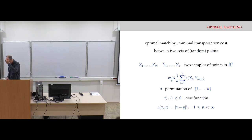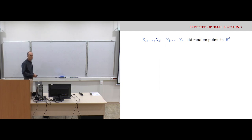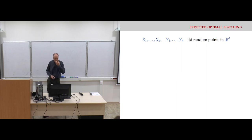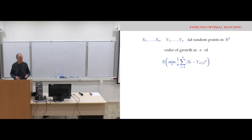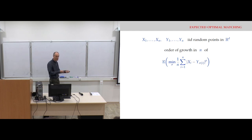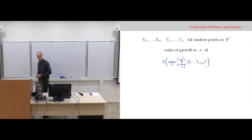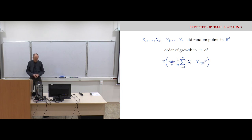We study this optimal matching problem from a probabilistic point of view: the points are random, chosen to be IID, independent and identically distributed with values in R^d. We are interested in this optimal matching problem trying to minimize the preceding quantity on the average — a first-order study of what is the order of growth in n, the size of the samples, of this expected optimal matching quantity, the minimum over all permutations sigma of this matching.